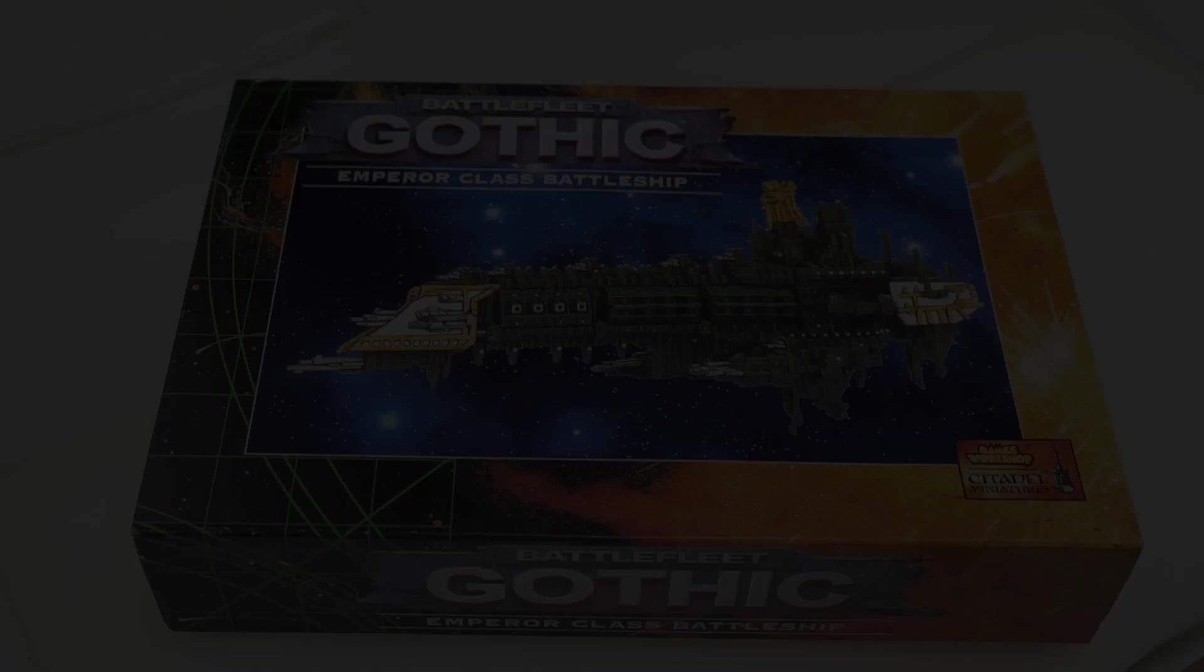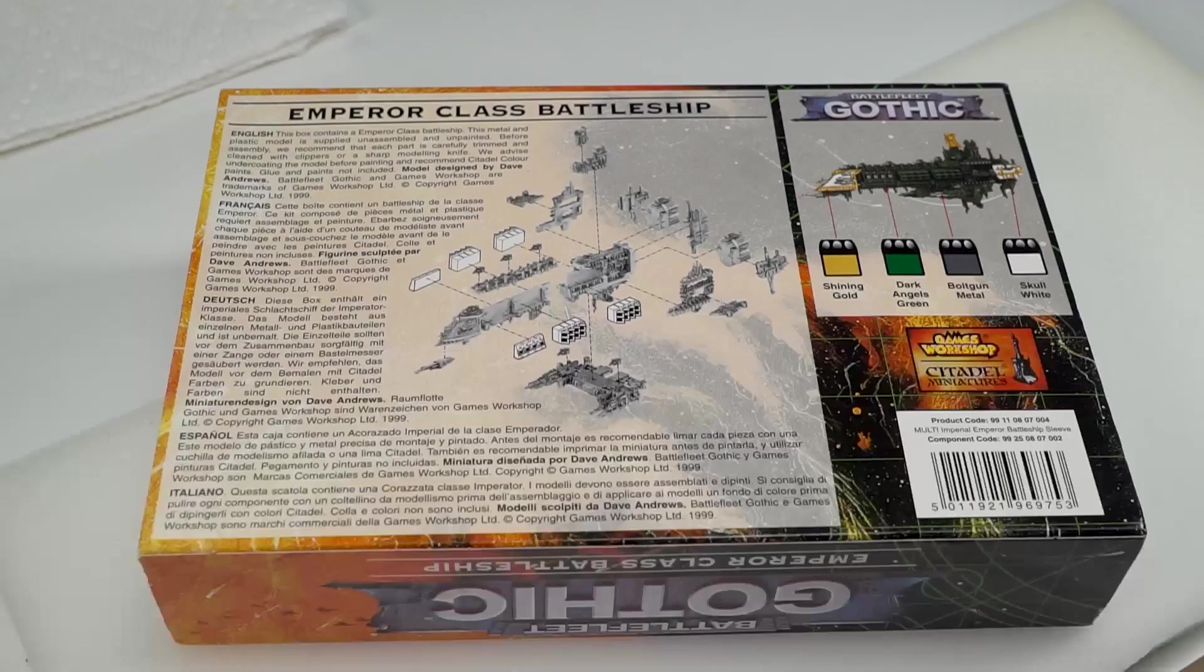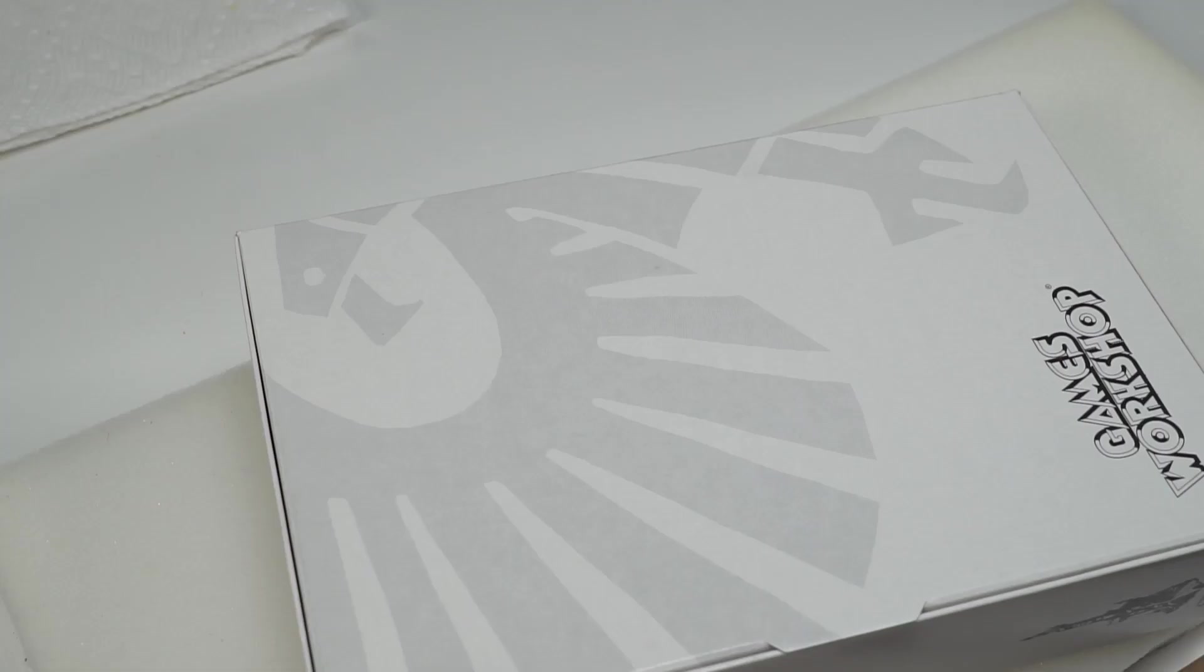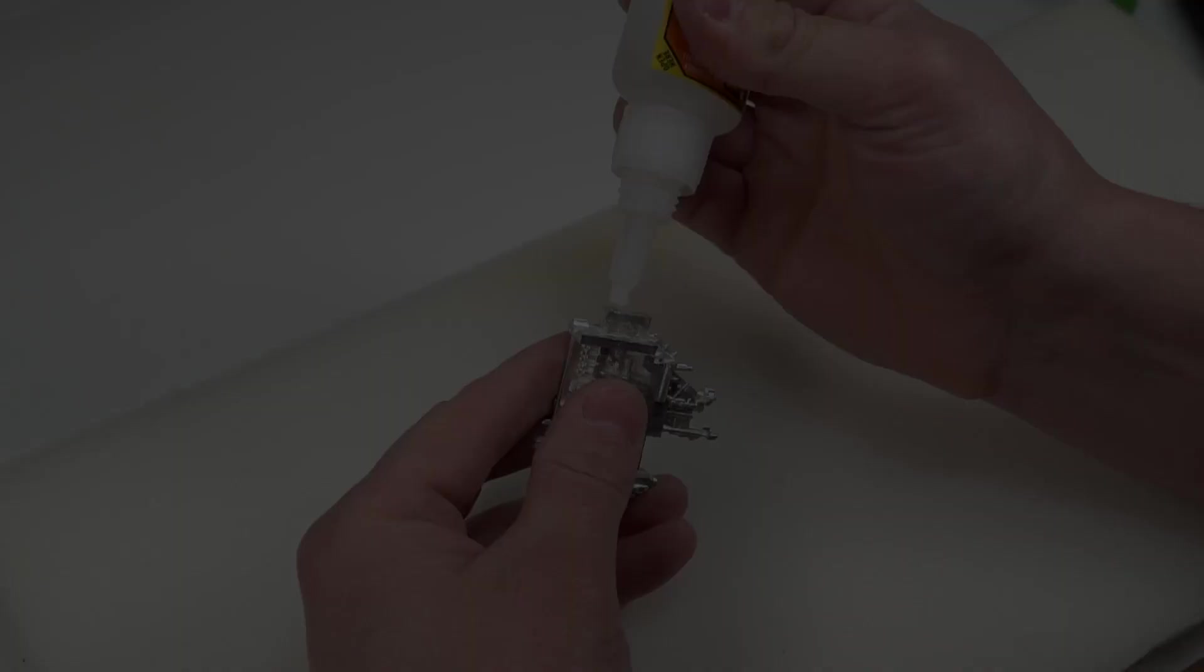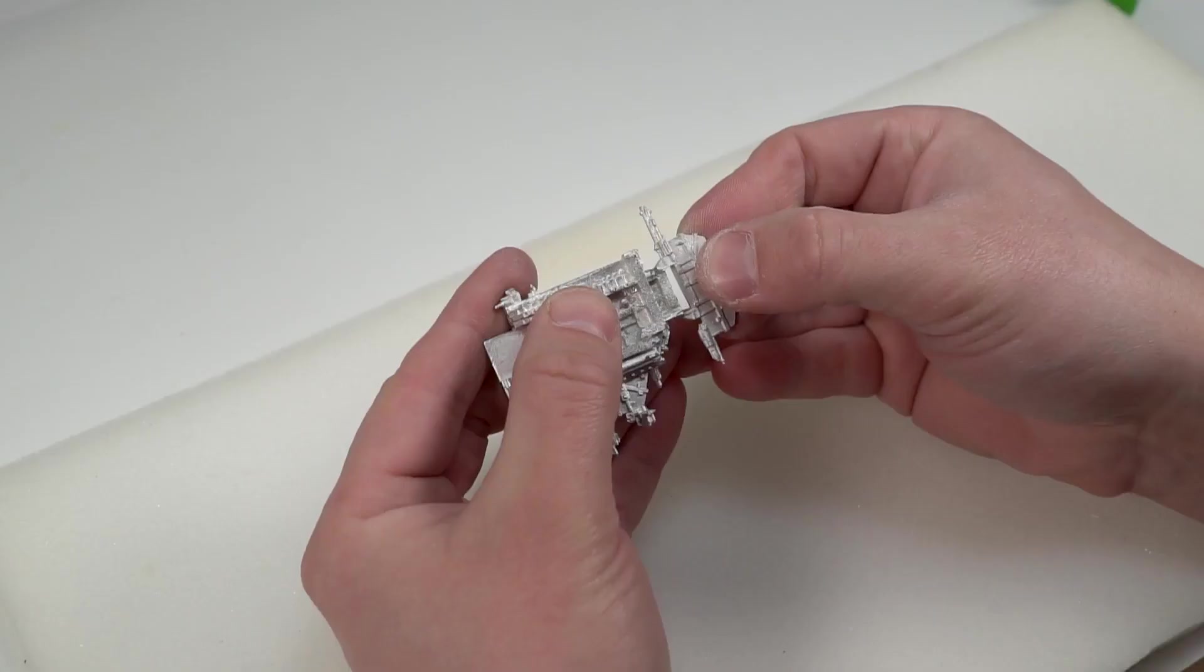Today we will be working on an Emperor-class battleship from the game Battlefleet Gothic. This is a model from 1999 and was still boxed prior to assembly and painting. Due to the fact these are cast white metal models, there will inevitably have to be some substantial amounts of cleanup if you want to have a good looking model at the end.